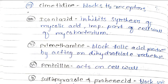Cimetidine blocks H2 receptors. Isoniazid inhibits synthesis of mycolic acid, an important part of the cell wall of Mycobacterium. Pyrimethamine blocks folic acid production by acting on dihydrofolate reductase.